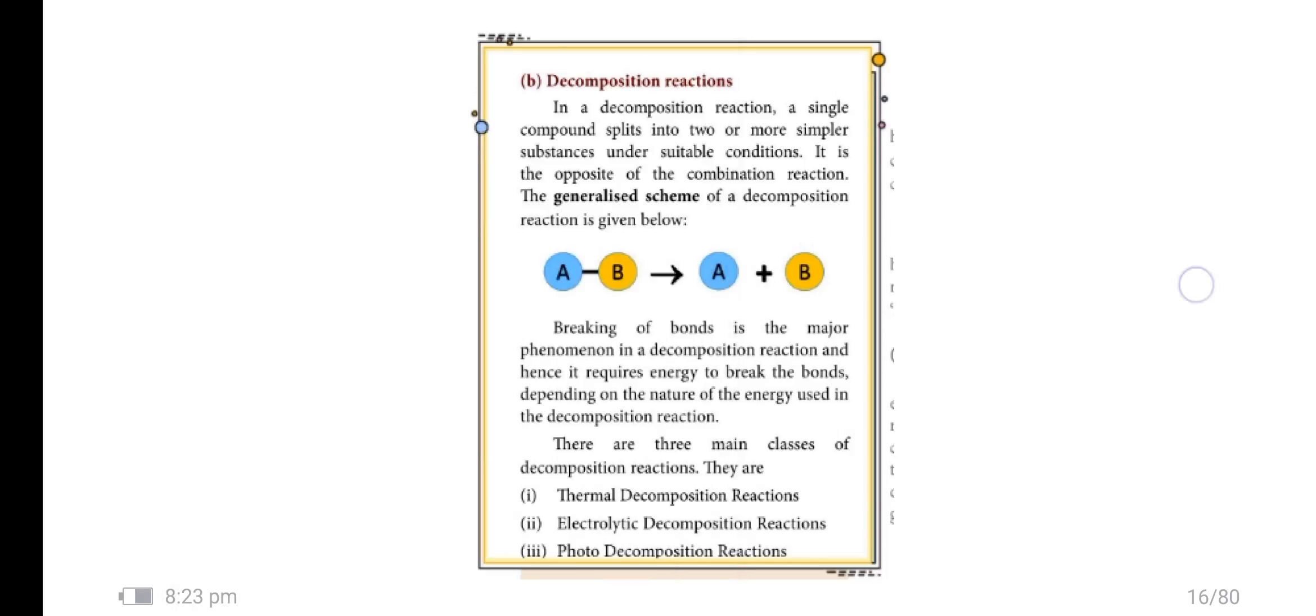Decomposition reaction. In a decomposition reaction, a single compound is split into two or more simpler substances under suitable conditions. It is opposite to the combination reaction. The generalized scheme of a decomposition reaction is given below. Breaking of bonds is the major phenomenon of decomposition reaction and hence it requires energy to break the bonds. Depending on the nature of the energy used, there are three main classes of decomposition reaction: thermal decomposition reaction, electrolytic decomposition reaction, and photo decomposition reaction.